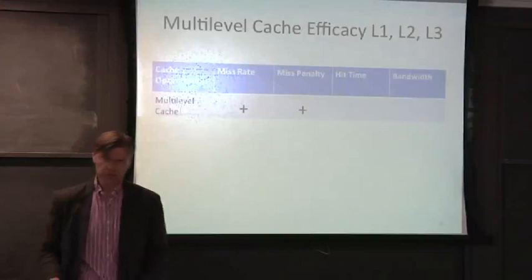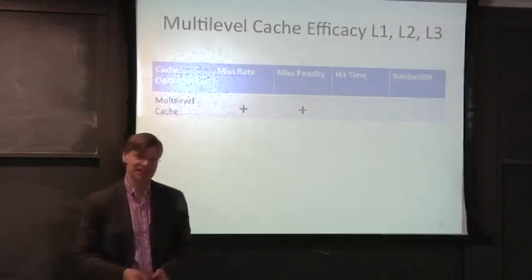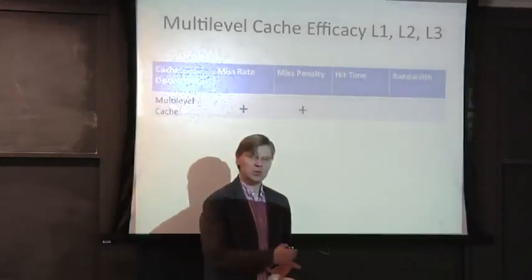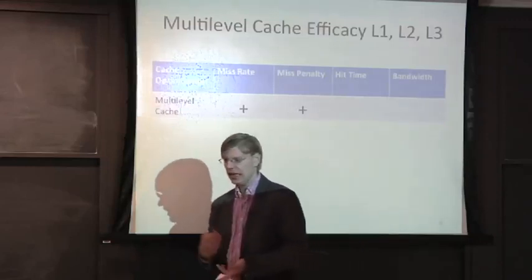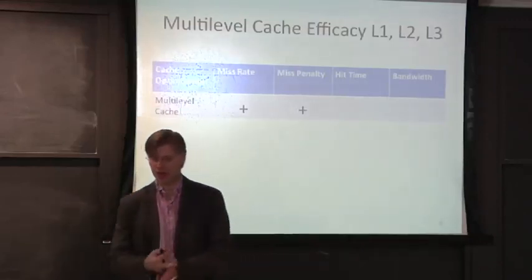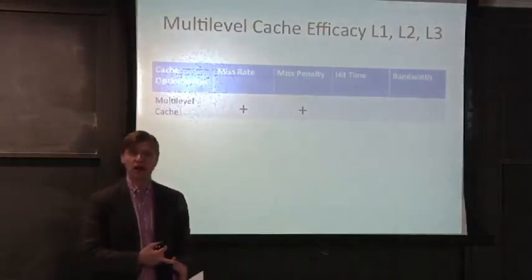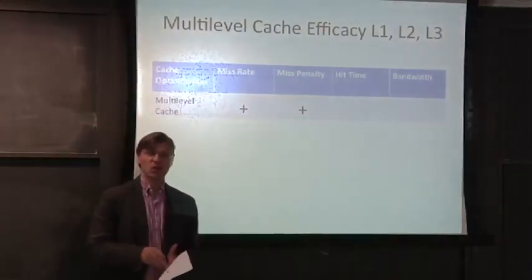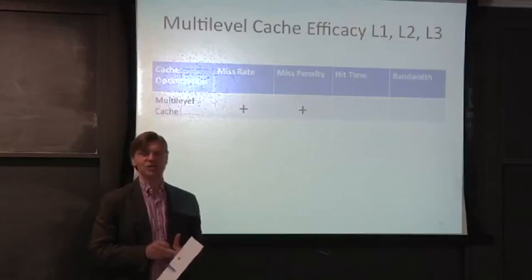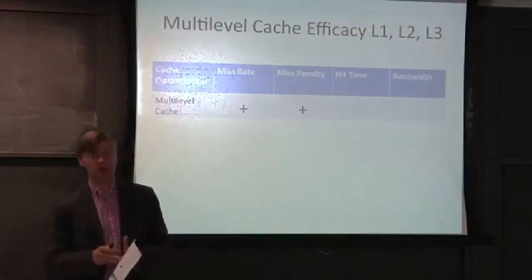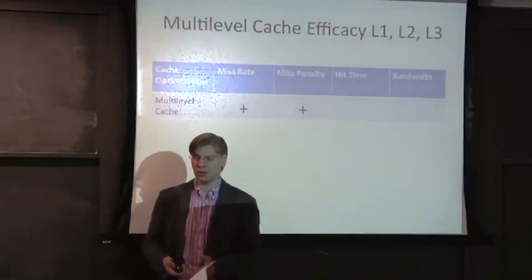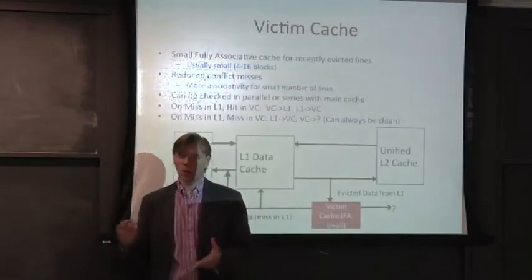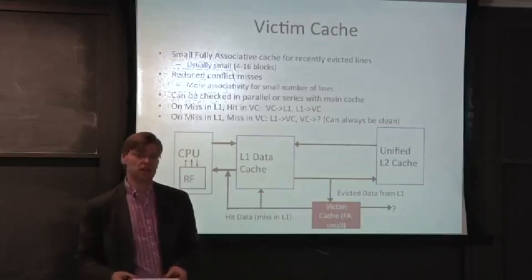So let's go on to our next cache optimization technique. We've talked about multi-level caches. Almost all processors today have multi-level caches. This is good. It's going to reduce our miss rate. And for at least the lower level cache, it's effectively going to reduce the miss penalty because it's going to be able to go to a closer cache versus having to go out to main memory. What's our new technique here?